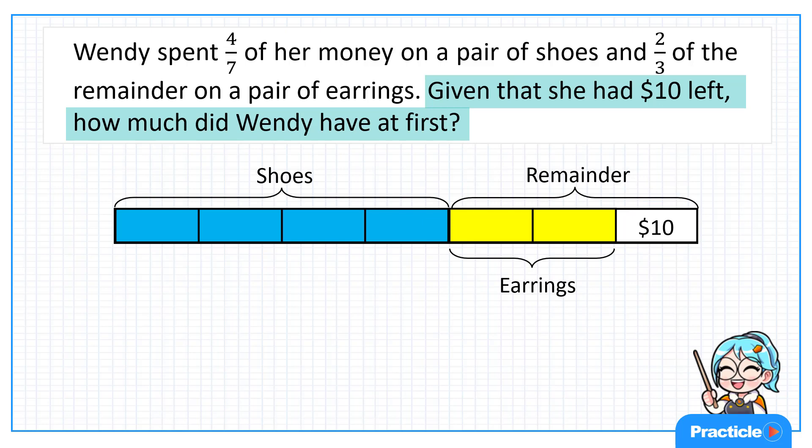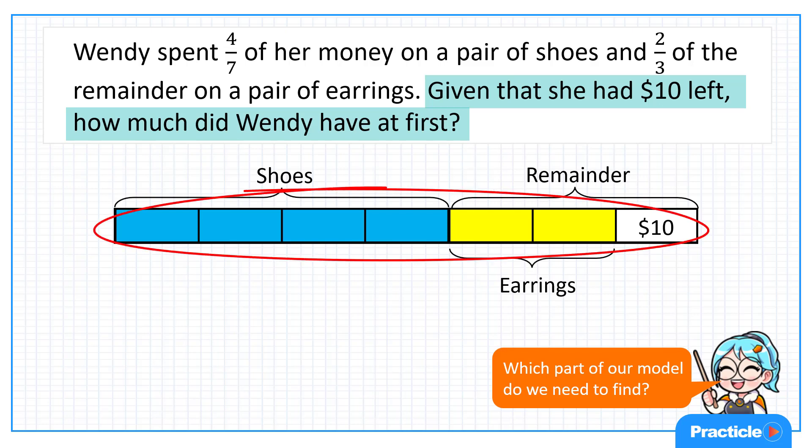And which part of our model represents the amount that Wendy had at first? Wendy started off with all these seven parts, correct? So if you said these seven parts, good job for getting that right.